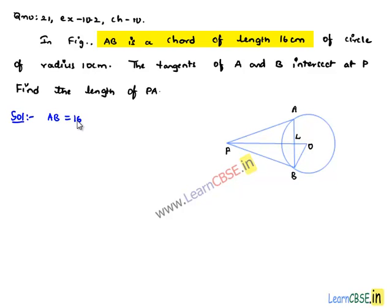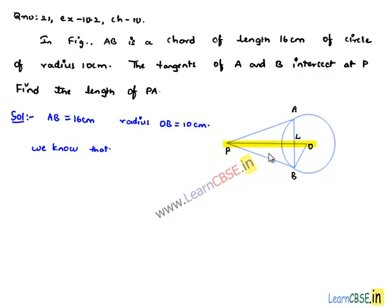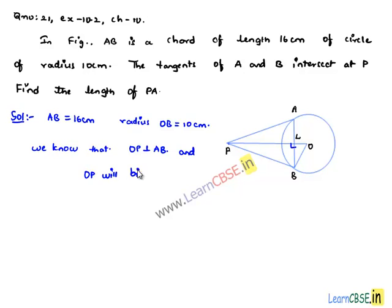From the figure, it is given that AB is equal to 16 centimeters and radius OB is equal to 10 centimeters. We need to find the length of PA. We know that the line from the center to the external point from where tangents are drawn is perpendicular to the chord, so OP is perpendicular to AB and also OP bisects AB. Therefore AL is equal to BL, which is half of AB, that is 8 centimeters.